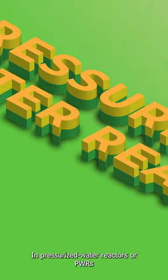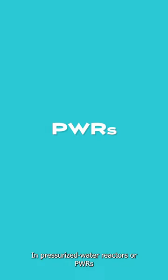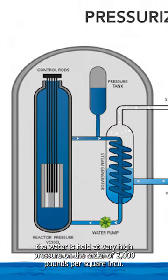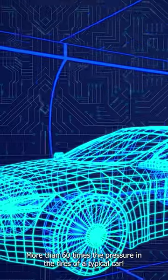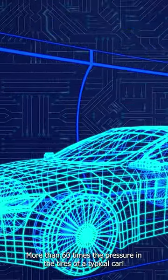In pressurized water reactors, or PWRs, the water is held at very high pressure, on the order of 2,000 pounds per square inch, more than 60 times the pressure in the tires of a typical car.